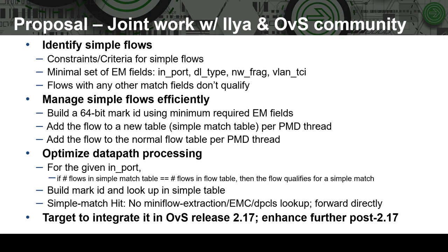Let's look at the solution being proposed. We are working with PILIA and the OVSDPDK community on this solution. The solution involves the following design points at a high level. We need to first identify these simple flows in the datapath. There are a few fields in addition to the ingress port that we have to exact match in the user space datapath due to some constraints — those are listed here, like DL type, VLAN TCI, etc. If only these fields are being matched, then the flow is considered a simple flow. Otherwise, if any packet header fields are specified in match, then it is not a simple flow.